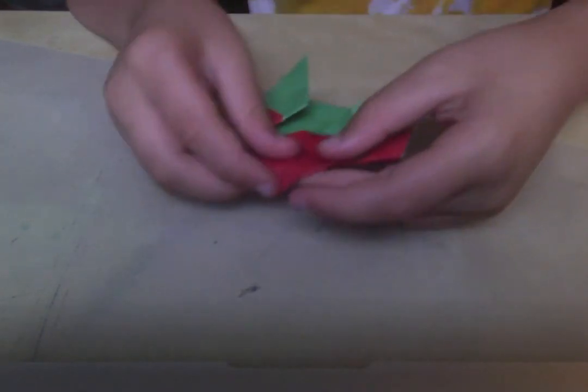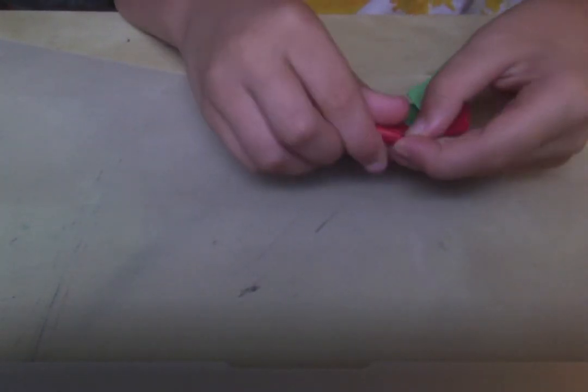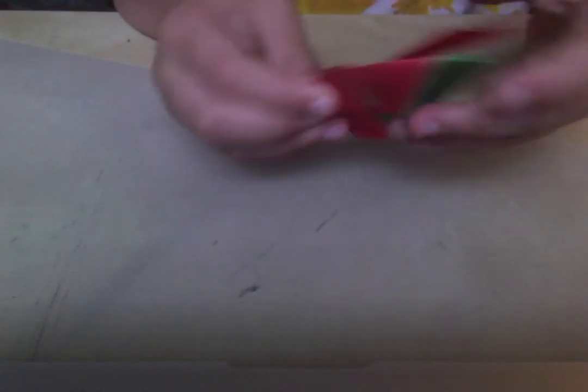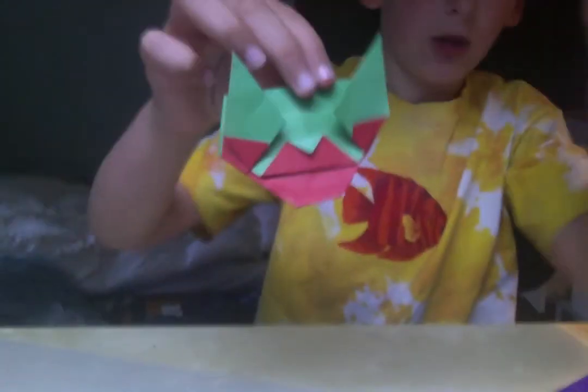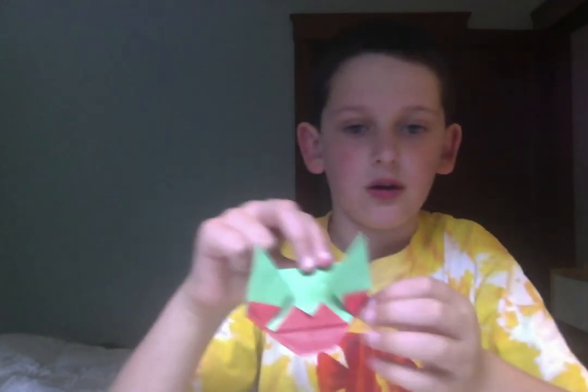And then when we have this point, mountain fold it up. And there you have your simple Chihuahua. It's pretty easy—it takes five or six minutes to fold. And see you next time on the Fourth Grader Origamist.